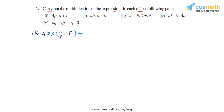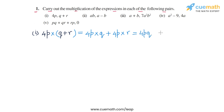Applying the distributive law, we get 4p into q plus 4p into r. So 4p into q will be 4pq and 4p into r will be 4pr. So the product in the first part is 4pq + 4pr.